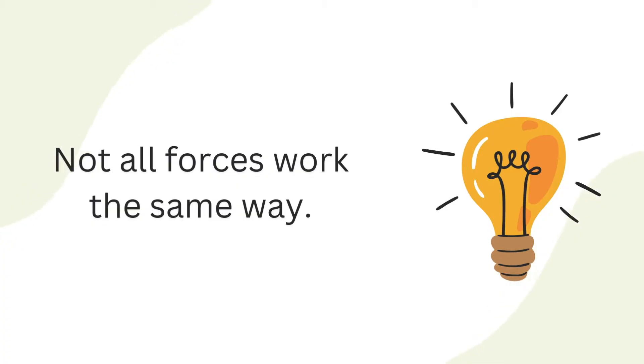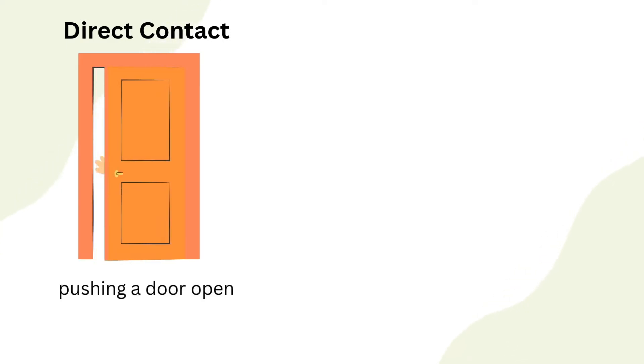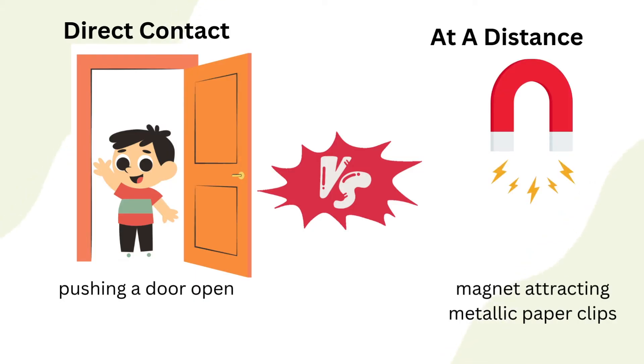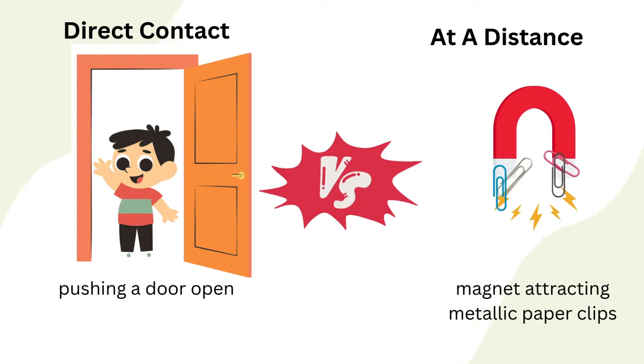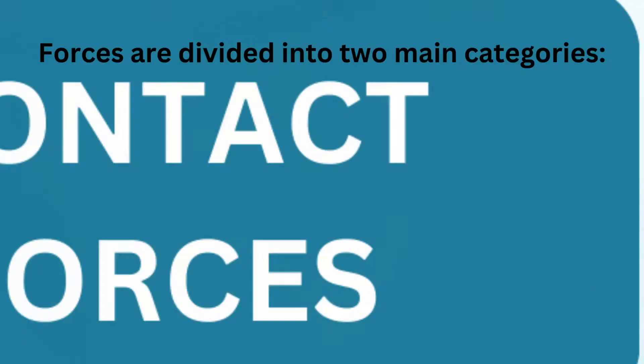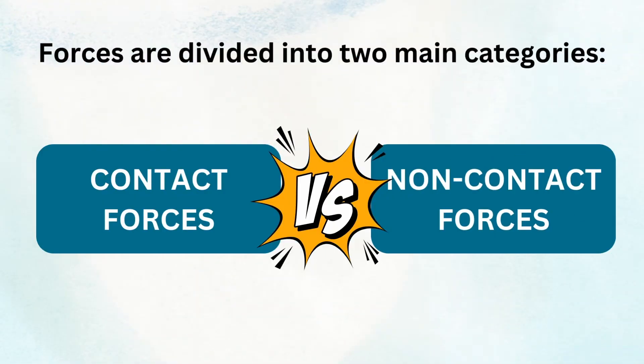But not all forces work the same way. Some require direct contact between objects, like when you push a door open, while others can act from a distance, like the force that makes magnets attracted to a piece of metal. To make sense of these different interactions, we divide forces into two main categories: contact forces and non-contact forces.